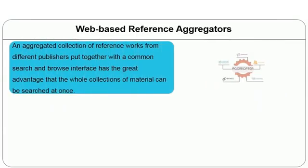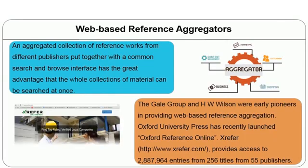The reference aggregator service means an aggregated collection of reference works from different publishers brought together with a common search and browse interface. This has the great advantage that the whole collection of material can be searched at once. For example, publishers like Springer, Taylor and Francis, and JSTOR all provide articles and publications across various disciplines.